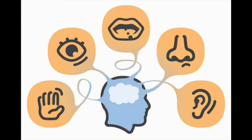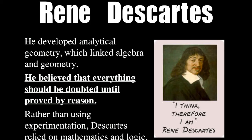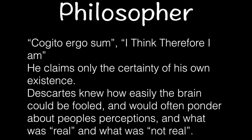Moving on to Descartes — it looks like 'Descartes' but it's actually pronounced 'Descartes.' Descartes believed that everything should be doubted until proven by reason. Rather than using experimentation, as strongly advocated by Bacon, he relied more on mathematics and logic. His most famous words were 'I think, therefore I am.' He claimed the only certainty he had was his own existence. Everything else — even something right in front of him, like a horse — he believed might not actually be what it appeared, because he understood that people's perceptions can be easily fooled.